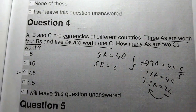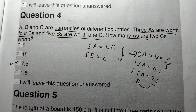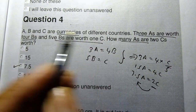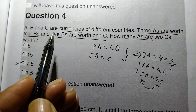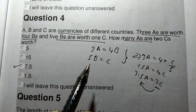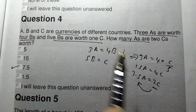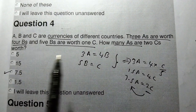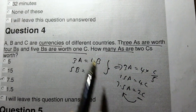Question number four: A, B, and C are currencies of different countries. Three A's are worth four B's, and five B's are worth one C. How many A's are in two C's? You have to solve these equations.